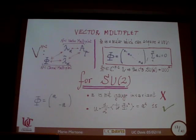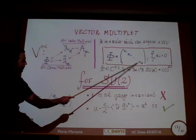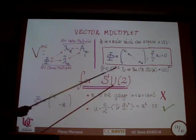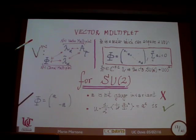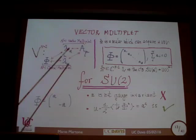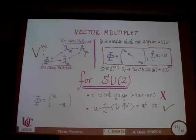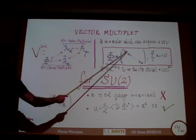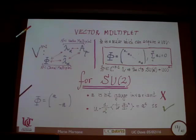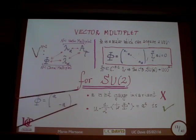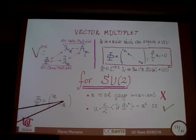How does the Coulomb branch look? Phi belongs to the adjoint, so I can use gauge transformations to put zeros in all off-diagonal entries of the matrix. For SU(N) you have N complex numbers with one tracelessness condition, giving N-1 complex dimensions. For SU(2), phi is just described by one complex number, which I'll call a. For now, I'm describing Coulomb branches which are one complex-dimensional. If these VEVs are non-zero, you still preserve N=2 — that's the whole point.